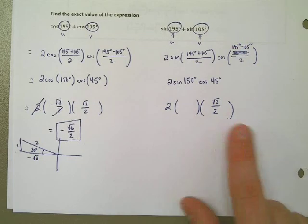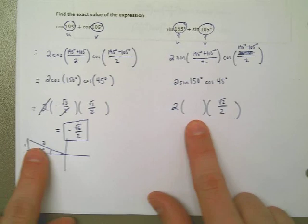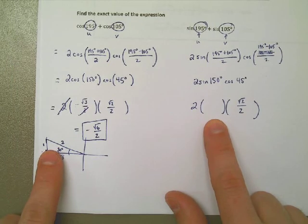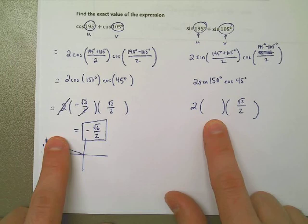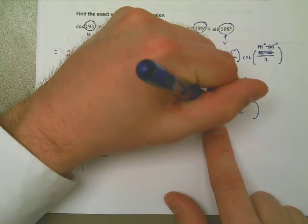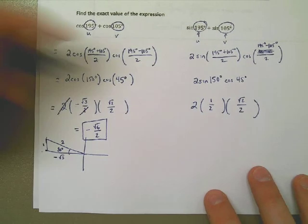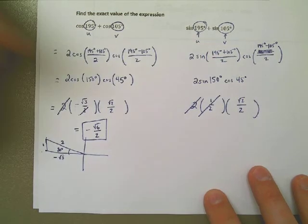Come back here to my triangle. The sine of 150 is positive, all students, sine is positive, positive 1 half. Opposite over hypotenuse. So it turns out then 2 times 1 half, those go away completely, it is the square root of 2 over 2.